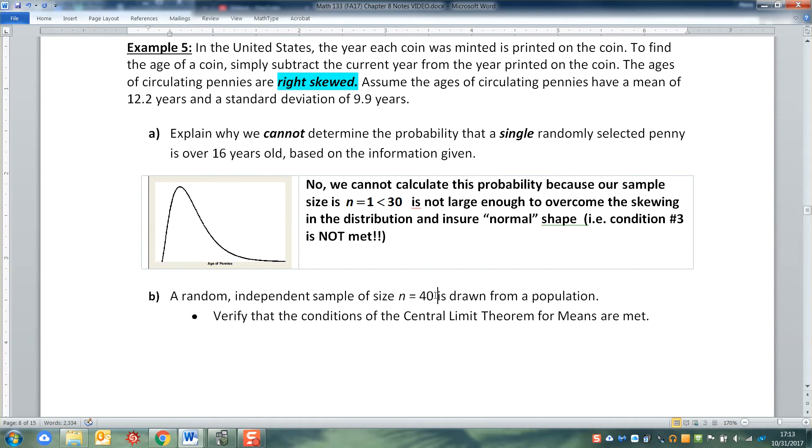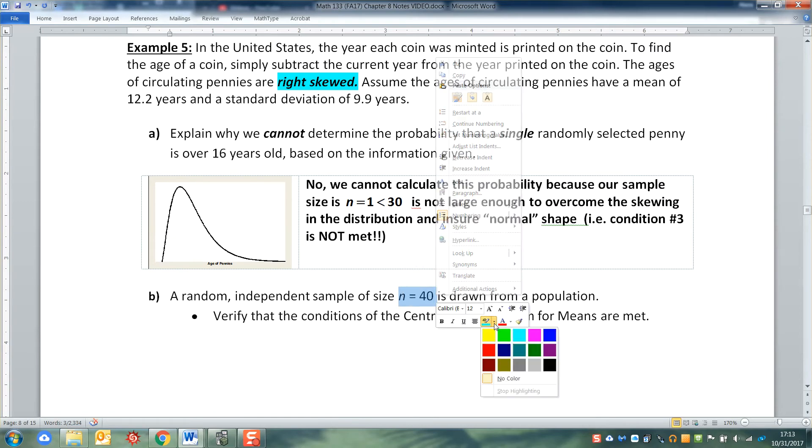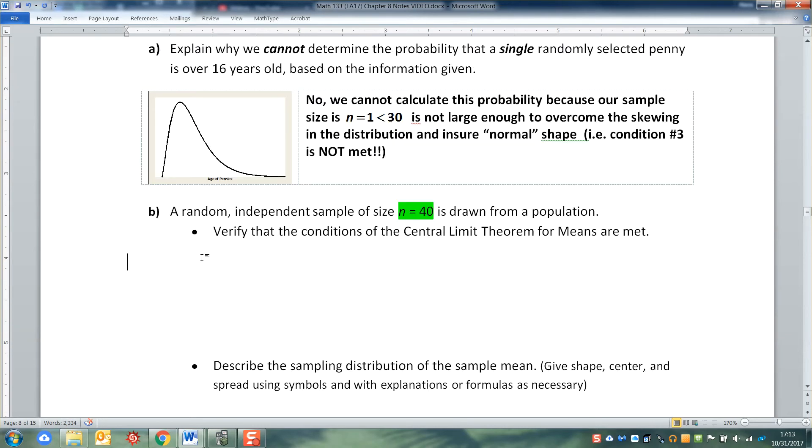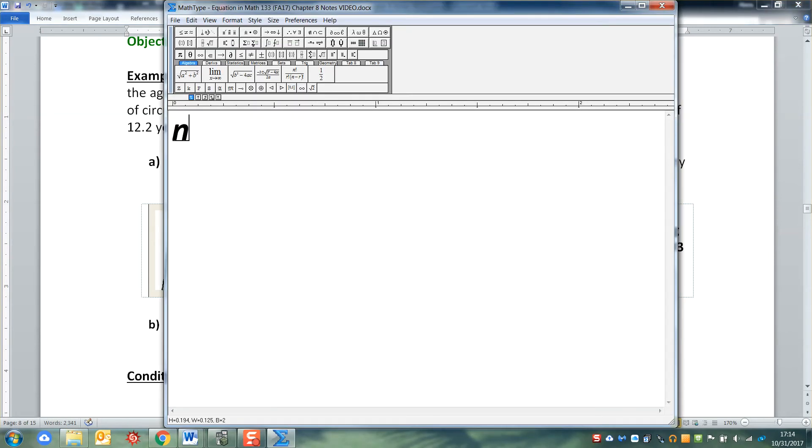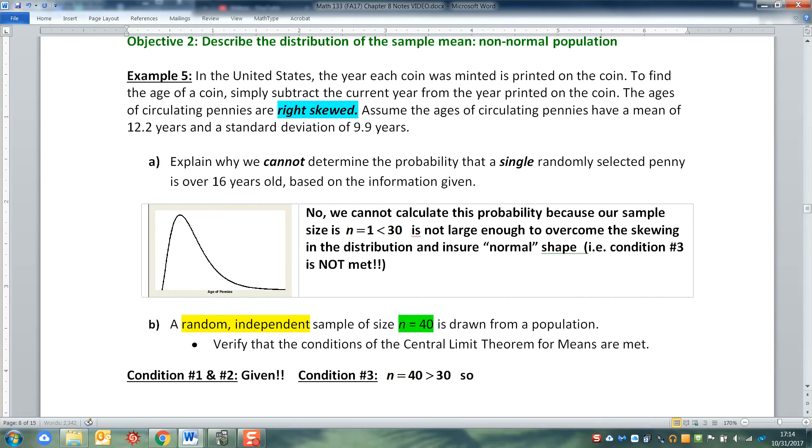So let's suppose instead that we have a sample size of 40. Now are we okay? And the answer is sure, yeah, you're fine. Because we are going to meet conditions 1 and 2. So condition number 1, that is random, was given. And actually so is number 2, they're given to you right there at the beginning. It says random and independent. So they are both given. So then we have to only check condition number 3. Condition number 3 says it has to be normal. And in order to ensure normal, you have to have a sample size large enough or it has to be given that it's normal. Well, we weren't given that it was normal, we were given that it's right skewed. So we need n equals 40 to be bigger than 30. But it is, so we're okay. n equals 40 is greater than 30, so distribution is normal and condition is met.